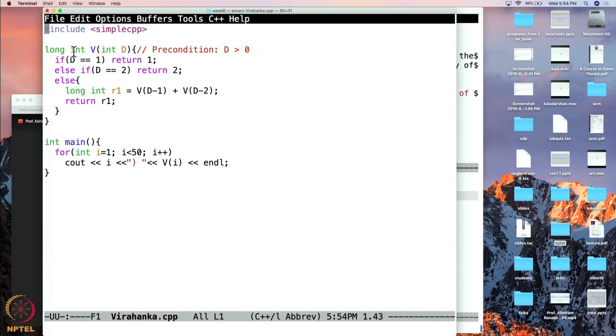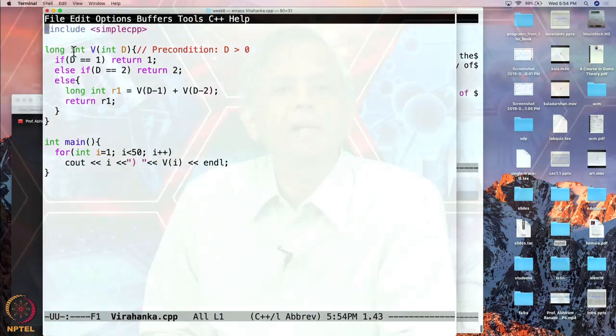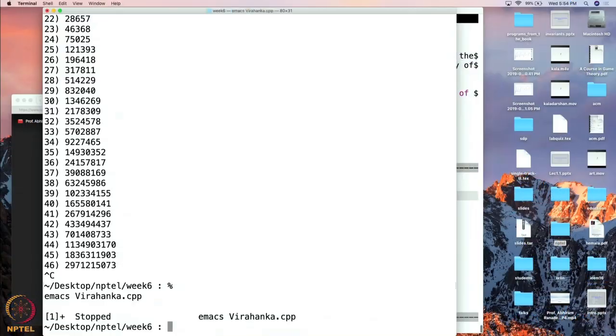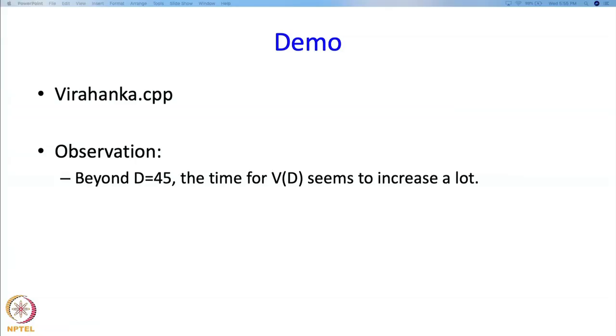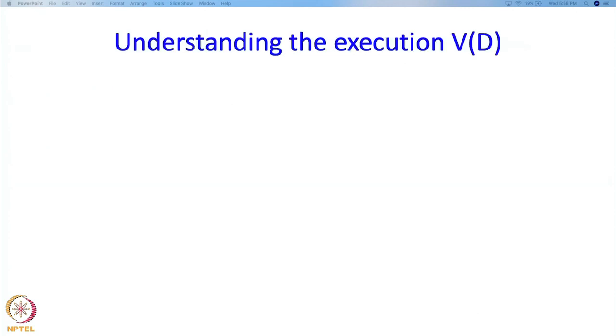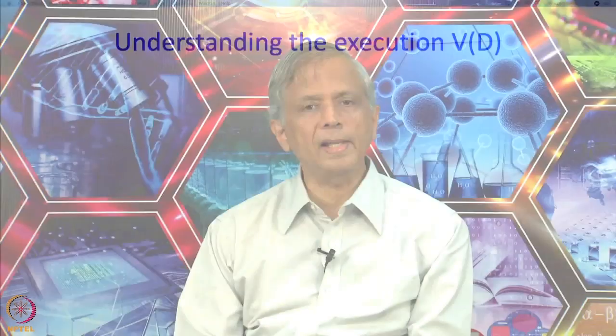At this point we have a puzzle. We wanted to calculate the first 50 Virahanka numbers, but the program seemed to be taking too much time at about 45. We need to figure out why that is the case. Yeah, beyond d equal to 45, the time for v of d seems to increase a lot. For that, why that is happening, let us try to understand the execution of v of d.